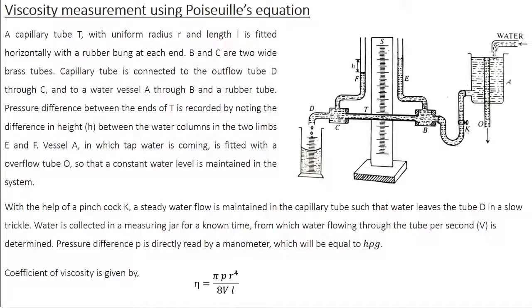In the previous class, we learned the derivation of Poiseuille's equation. Today, let's see how to experimentally measure the viscosity of a fluid using Poiseuille's equation. The experimental setup is shown in the figure. You have a capillary tube with uniform radius R and length L, which is fitted horizontally with a rubber bung at each end.